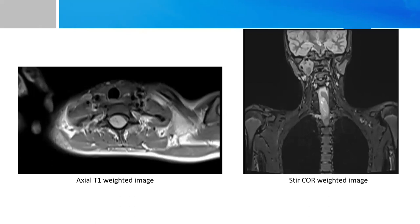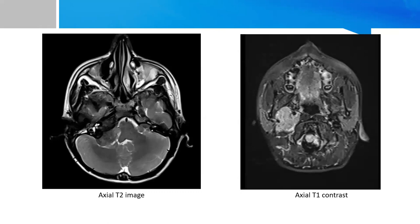The same finding can also be confirmed on the STIR-core image. We can also see a well-defined enhancing solid mass lesion noted in the region of the right carotid space, which is causing splaying of the internal jugular vein and the internal carotid artery. On the axial T2-weighted images we can see bilateral CP angle solid mass lesions with intracanalicular extensions. An axial T1 post-contrast image at a lower level shows the solid mass lesion in the right carotid space causing splaying of the ICA and the IJV.